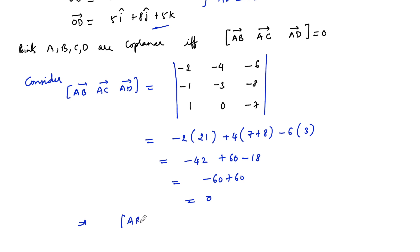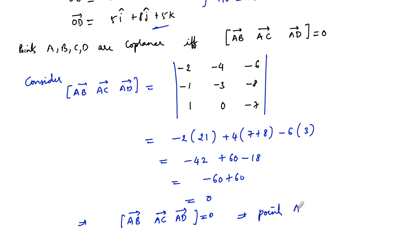So we got [AB, AC, AD] = 0, which implies that points A, B, C, D are coplanar — meaning they are lying on the same plane.